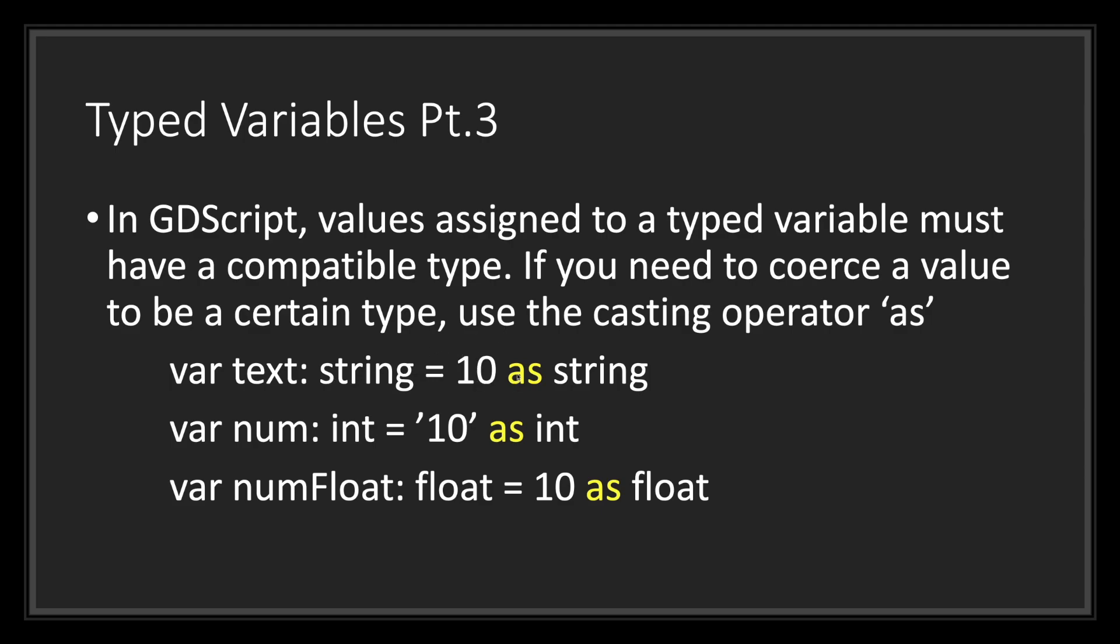So what we do is we type the casting operator as spelled A-S, followed by the data type we want to convert it to. In this case, we want to convert our integer value 10 into a string. By doing this, we will avoid throwing an error at the same time we will get the results we want. In this case, we want to turn 10 into a string.